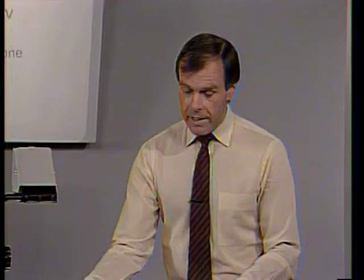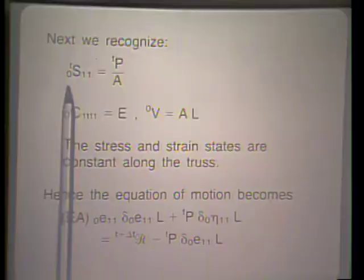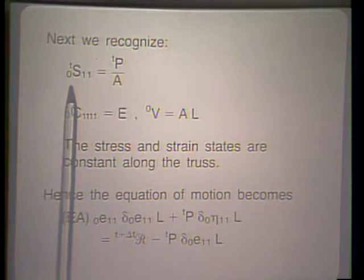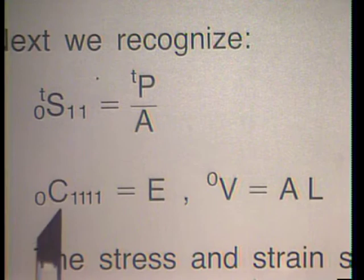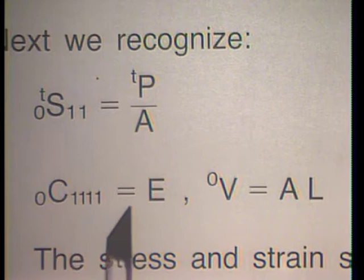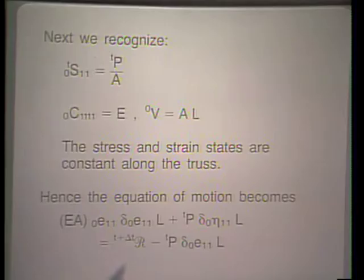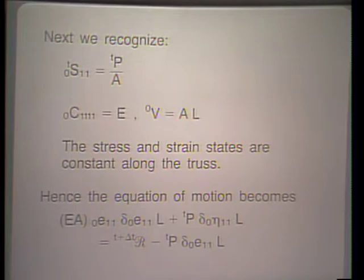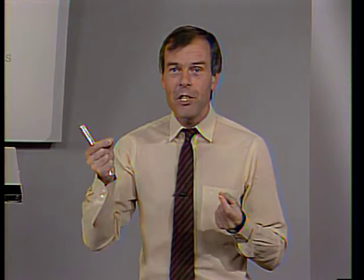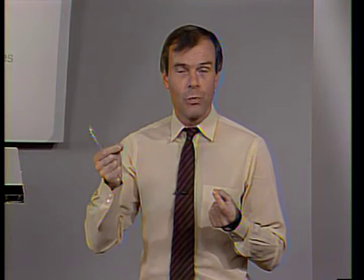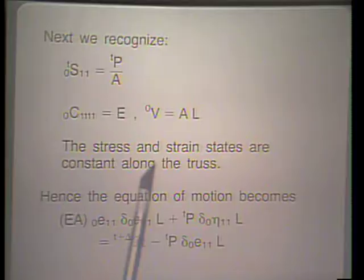The next step is to look at the individual terms in that equation. We recognize that S₁₁ is nothing else than TP over A, C₁₁₁₁ is equal to E, and the volume is given as shown. The stress and strain states are constant along the truss because we are dealing with two nodes only — only a linear interpolation of displacement between the two nodes is possible, meaning strains must be constant and corresponding stresses must be constant as well.